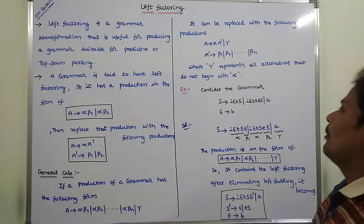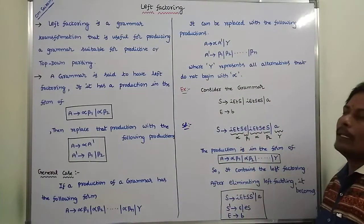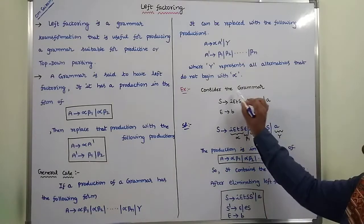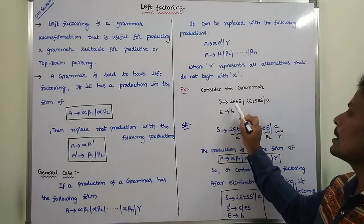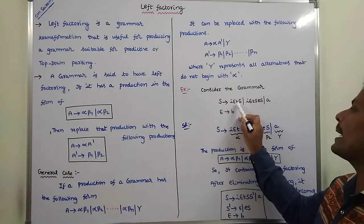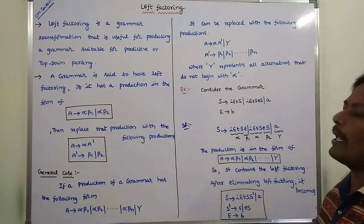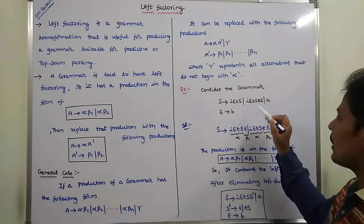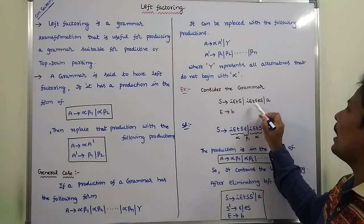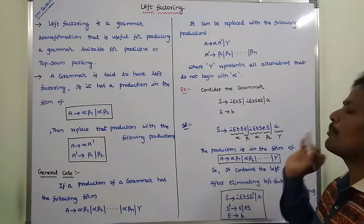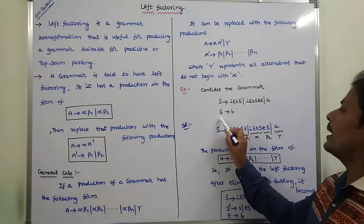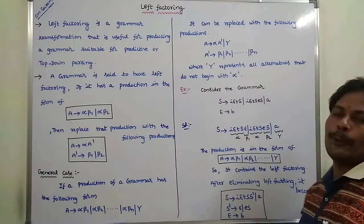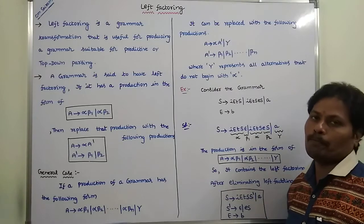Next, we go for an example. Consider the given grammar: S tends to small i, capital E, small t, capital S, or small i, capital E, small t, capital S, small e, capital S, or a. And E tends to b.